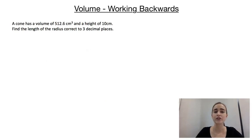Our last example says that a cone has a volume of 512.6 centimeters cubed and a height of 10 centimeters. We're asked to find the length of the radius correct to three decimal places.